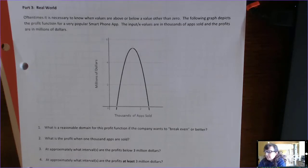Okay, so this is a real world example from the lab manual. It's in the section Interpreting Graphs Part 2 and it's Part 3 where it says Real World and it's the current page number 9. That page number may change. So I'll just go through this one with you. It says, oftentimes it's necessary to know when values are above or below a value other than zero. The following graph depicts the profit function for a very popular smartphone app. The input or x values are in thousands of apps sold and the profits are in millions of dollars.